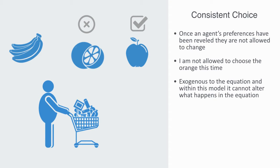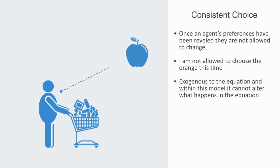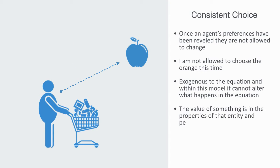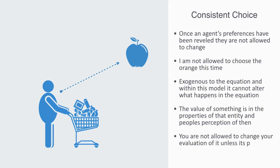Because in both cases I did not choose the banana, it is considered not part of the optimization equation and cannot alter my choices. The banana is exogenous to the equation — it is part of the context — and within this model the context cannot alter what happens in the equation. What all of this is saying is that the value of something is in the properties of that entity and people's perception of them, and you are not allowed to change your evaluation of it unless its properties change.